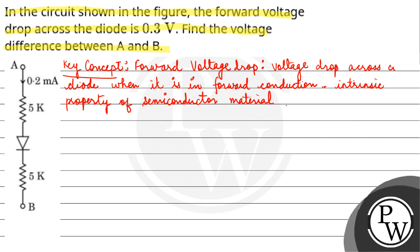Now according to the question, you can see there is a 5 kilohm resistance, then the diode, and again a 5 kilohm resistance to point B.